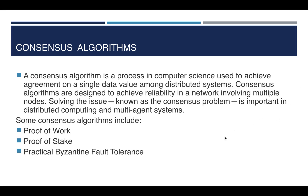Now let us look at consensus algorithms. In order for the network to decide which transactions should form a block and where it should be placed in the blockchain, a consensus algorithm must be in place. Consensus algorithms are designed to achieve reliability in a network involving multiple nodes or peers. There are different types: proof of work, proof of stake, and practical Byzantine fault tolerance.